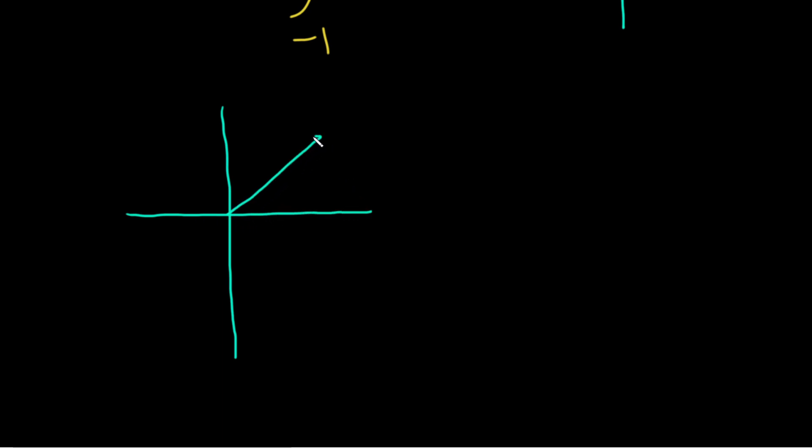So here's one arrow and here's another arrow. Then here's negative 1, here's 1, and here's 2.